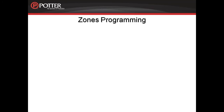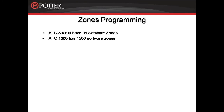The Zones tab is where you assign points to software zones and define software zone characteristics. The AFC50 and AFC100 control panels have 99 programmable software zones, while the AFC1000 has 1500 programmable software zones. Each point, such as a smoke detector, heat detector, monitor module, relay modules, I-O circuits, and notification circuits, needs to be assigned to a software zone.